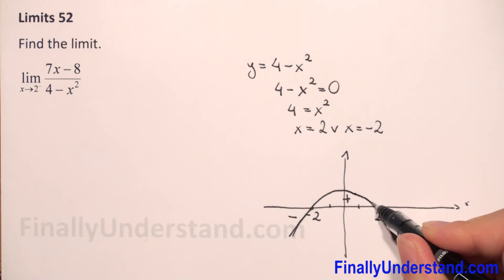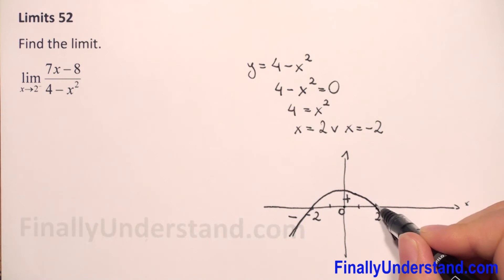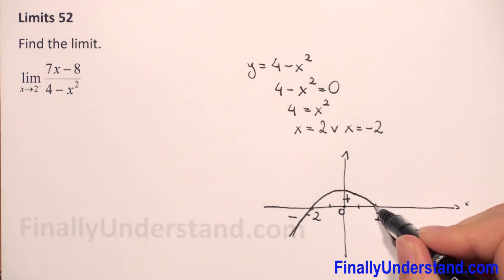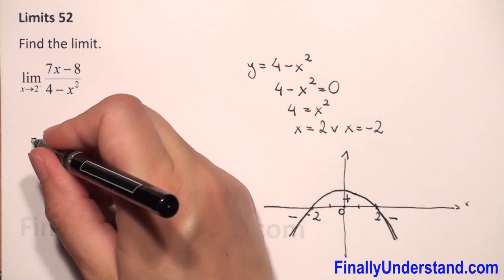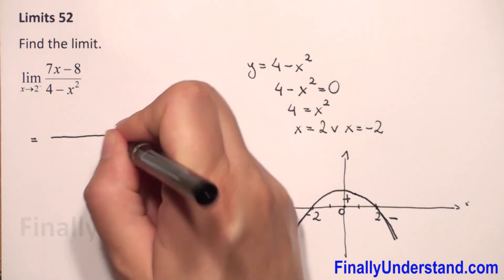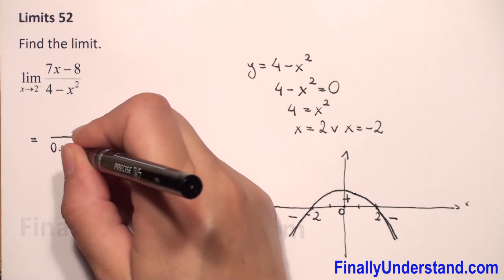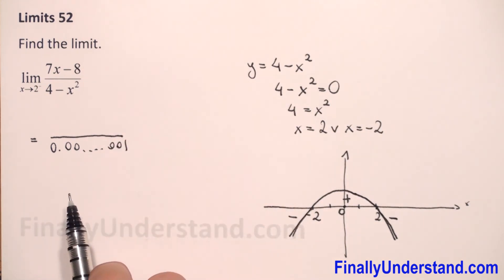When we are very close to 2 from the left, the value of the numerator is almost 0 — but slightly positive, because that part of the graph is above the x-axis. So in the numerator we have a very small positive number, like 0.0001.